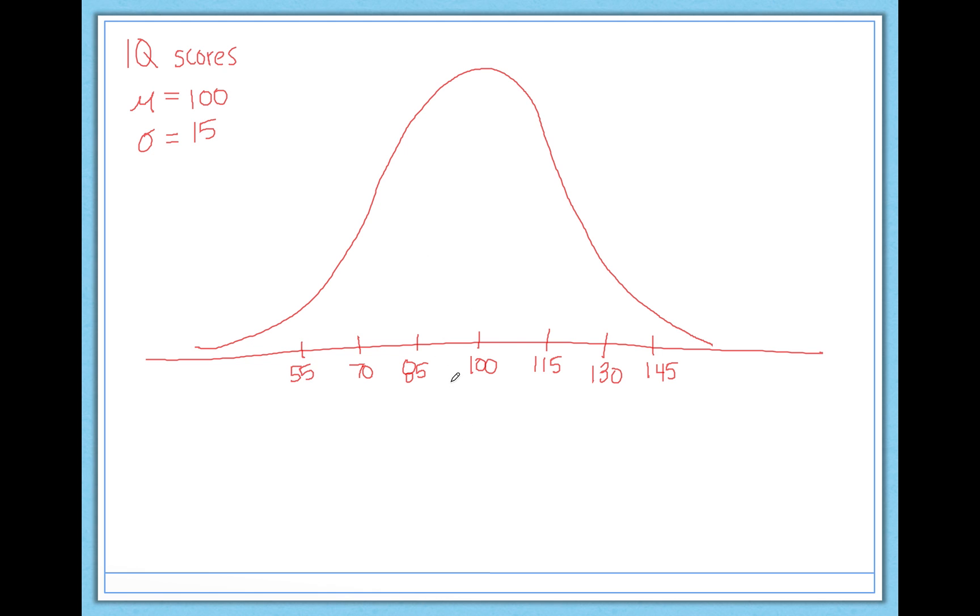So again, I automatically know 68 percent of people will fall between an IQ of 85 and 115. I also know that 95 percent of people will fall between an IQ of 70 and 130. And finally, that 99.7 or so will fall between an IQ of 55 and 145. So this is great to know because if you tell me you have an IQ of 146, I'm really impressed. This is rare. This is very extreme.